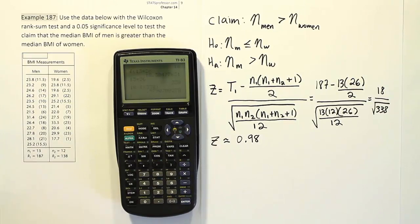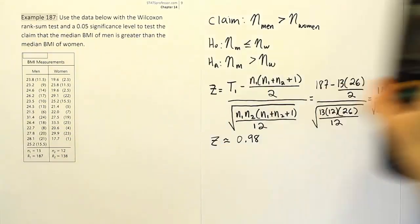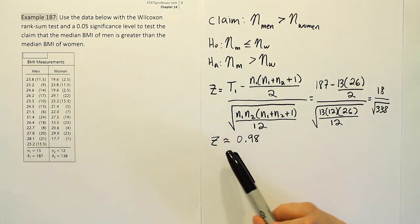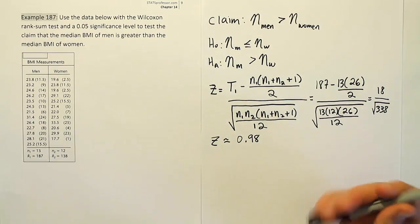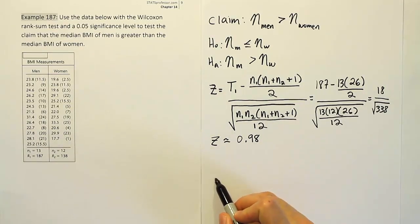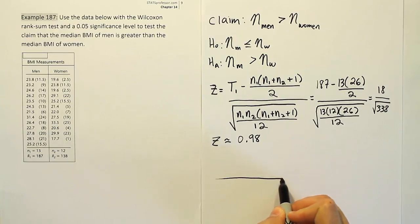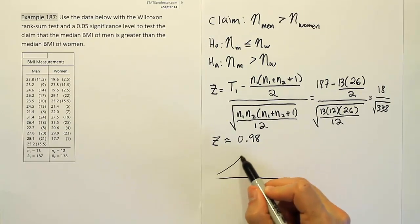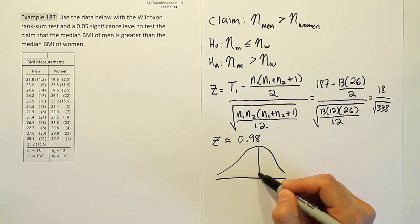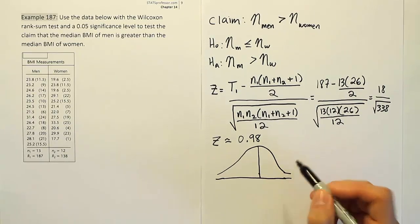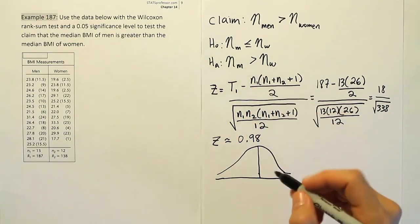You can kind of tell already that this test stat isn't very extreme, so it's not going to end up in any rejection region. But just to be sure, we're going to do the critical value. So the critical value, we'll draw the bell curve or the z distribution curve. And we'll use that as a representation of our bell curve. And then we'll look at the type of test we're conducting here. It looks like a right tail test.